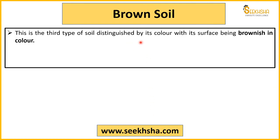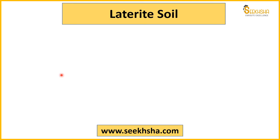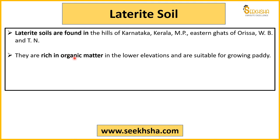Next is laterite soil. We distinguish it by its color. It is rich in organic content. Laterite soil is mainly found in Karnataka, Kerala, MP, Odisha, West Bengal, and Tamil Nadu. At lower elevations, these soils are rich and suitable for cultivation.